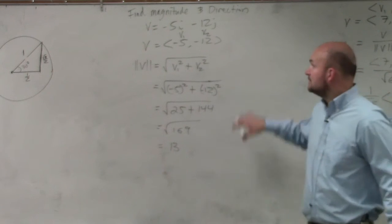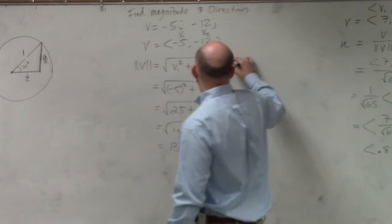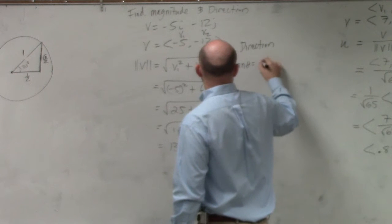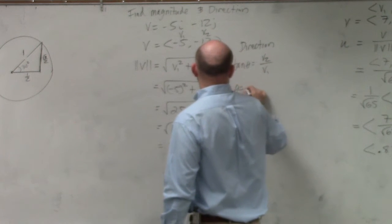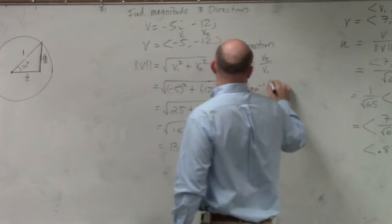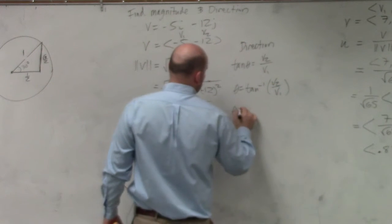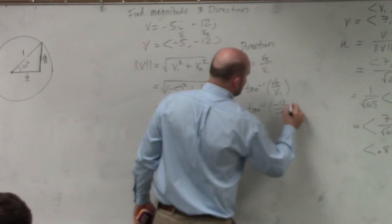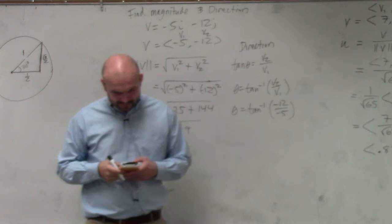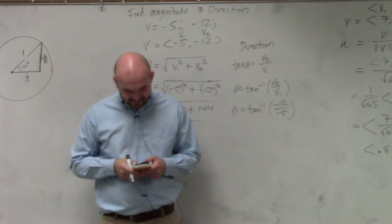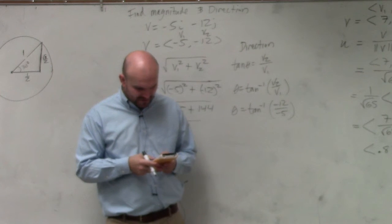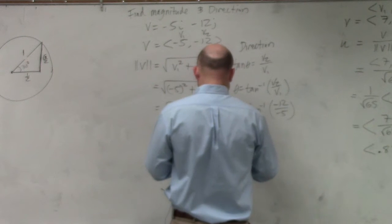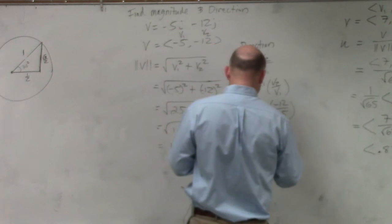And the next thing is to find the direction. So now, the direction, tangent of theta equals v2 over v1. So theta equals tan inverse of v2 over v1. Theta equals tan inverse of negative 12 over negative 5. So I do tan inverse of 12 divided by 5. Theta equals 67.38 degrees.